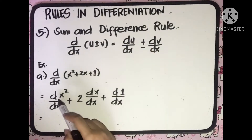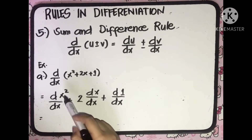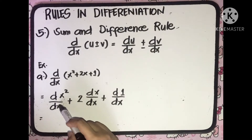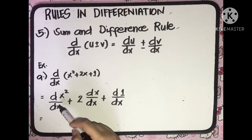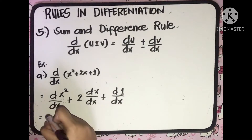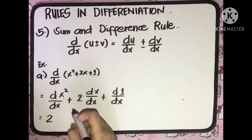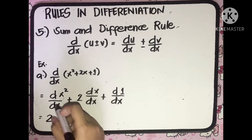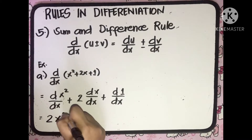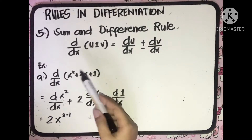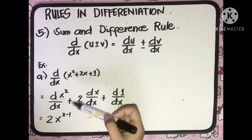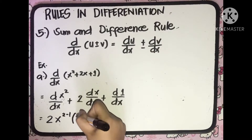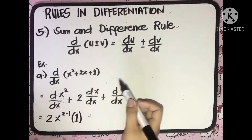To simplify: in the first term, the derivative of x squared with respect to x — by the Power Rule — gives us 2 multiplied by x raised to 2 minus 1. Since the derivative of x equals 1, we can write times 1.